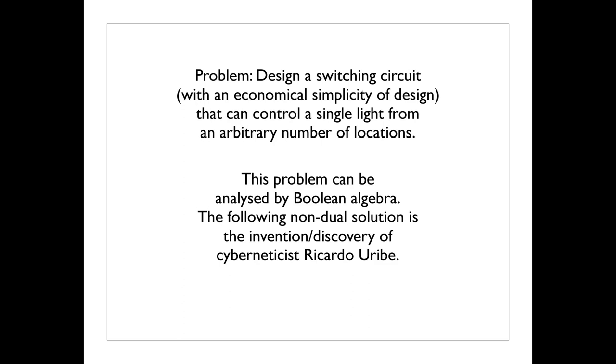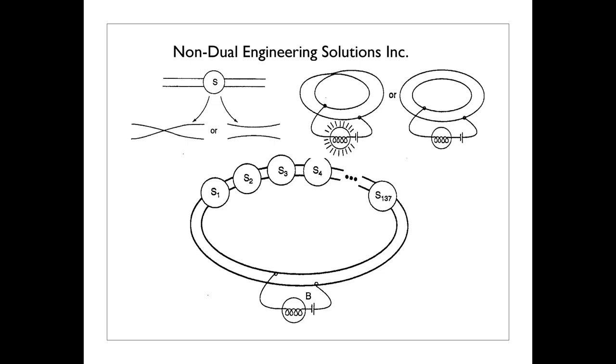And again, the boundary of the Mobius band is one, and yet it is also two, depending on how you look. Here I'm shifting into a practical problem that is related to the Mobius band. I think you might find the number of shifts that I make into little sidelines curious and maybe a little unnerving. I don't intend to confuse you with these digressions, but I think they're interesting. So here's the engineering problem, which you may know. Design a switching circuit that can control a single light from an arbitrary number of locations. Now, this can be analyzed by Boolean algebra, but I wanted to show you a kind of non-dual solution.